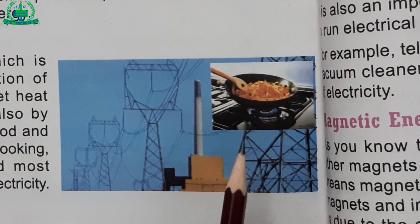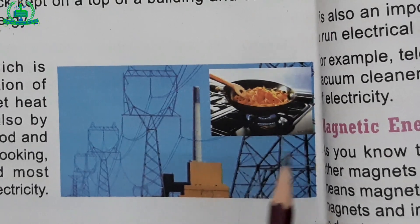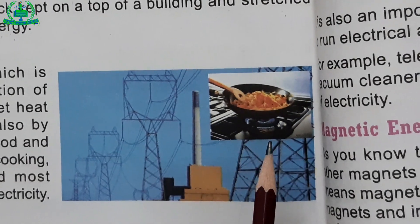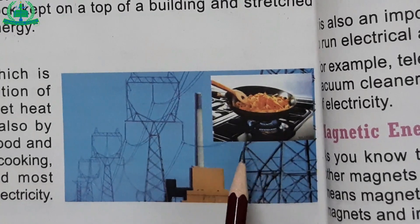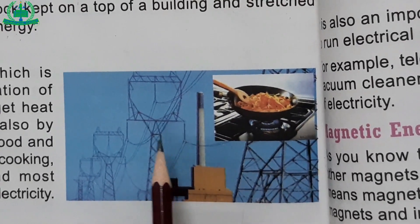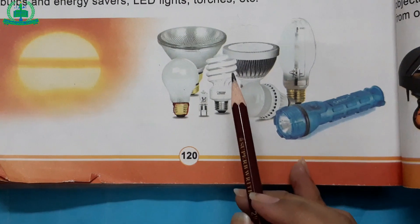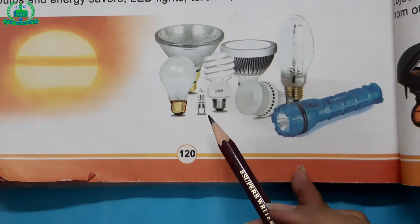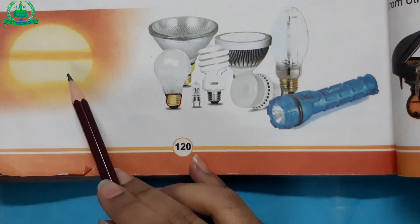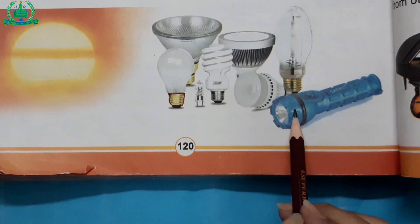Heat energy: it is a form of energy which is responsible for the sensation of hotness or coldness. We get heat energy from the sun and also by burning various fuels like wood and coal. This energy is useful in cooking, running steam engines, and most importantly in generating electricity. Light energy: it is a form of energy that makes things and objects visible to us. The sun is the main natural source of light for us. We also get light from stars, bulbs, LED lights, savers, and torches.